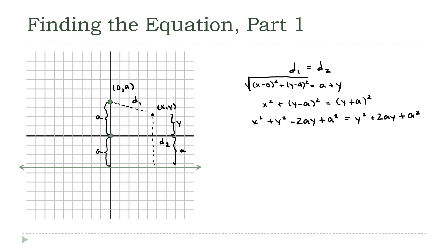And that's excellent, because I can cancel a lot of stuff. I can subtract y squared from both sides, I can subtract a squared from both sides. And all that's left is x squared minus 2ay equals 2ay. And now let's get the y's on the right side. So if I add 2ay to both sides, x squared equals 4ay.